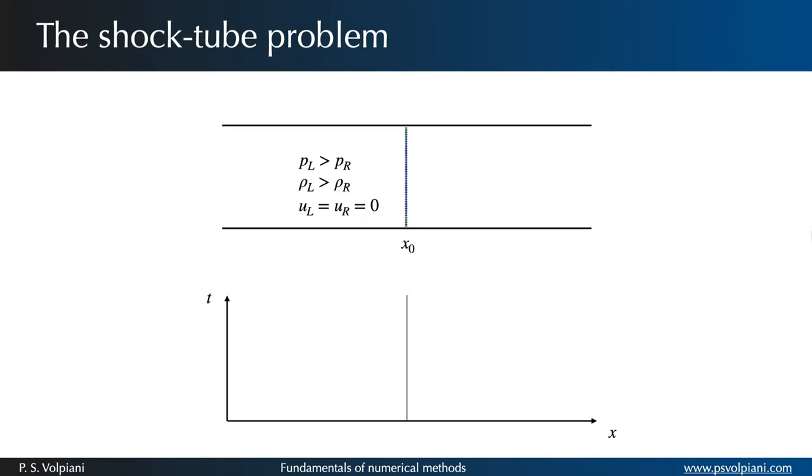In the shock tube problem, also called Riemann problem, two gases are separated by a thin membrane inside a tube. The two gases are at different thermodynamic states, and when the membrane is broken, waves travel along the length of the tube.